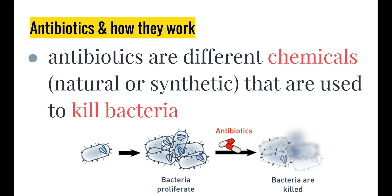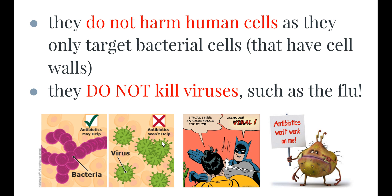So what are antibiotics and how do they work? Antibiotics are different chemicals — they can be natural, created by microbes themselves, or synthetic, created in the lab — that are used to kill bacteria. They do not harm human cells as they only target bacterial cells that have cell walls. Since animal cells do not have a cell wall, these antibiotics do not attack our normal everyday cells.